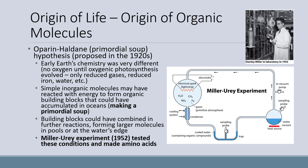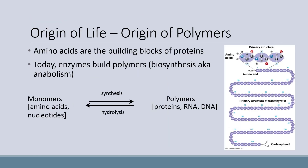Before a cellular organism could evolve, organic molecules like proteins had to evolve first. This is outlined by the primordial soup hypothesis. Early Earth's chemistry was very different from today — there was no oxygen until oxygenic photosynthesis evolved, so there were only reduced gases, reduced iron, water, and so on. Simple inorganic molecules may have reacted with energy to form organic building blocks that accumulated in the oceans, making a primordial soup. The building blocks could have combined in further reactions, forming larger molecules in pools or at the water's edge. An experiment in 1952 tested this by mimicking Earth's early atmosphere and introducing a spark, and they made amino acids. Amino acids are the building blocks of proteins, so making amino acids was the first step.